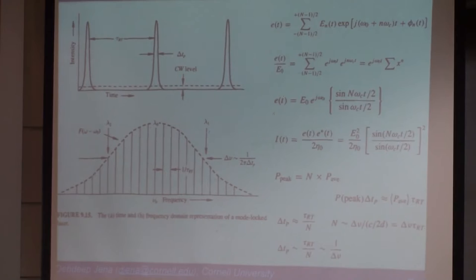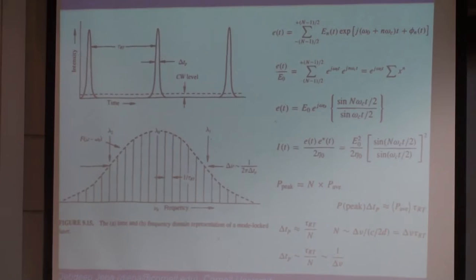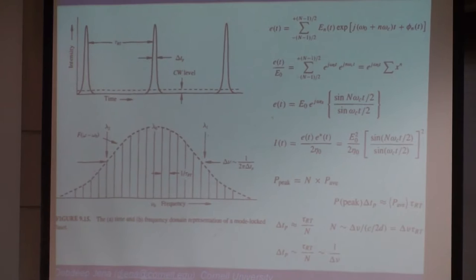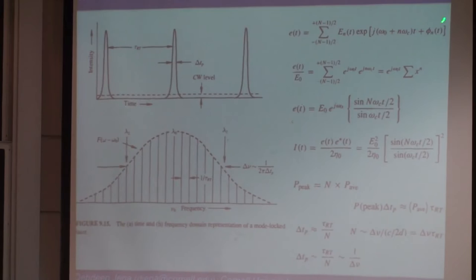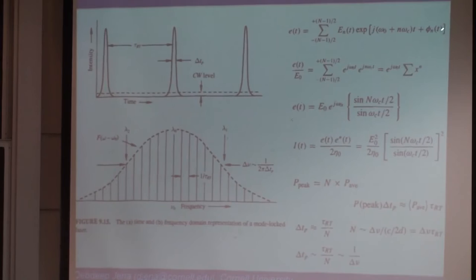Regarding where the random phase comes from: it's a noise term — we're allowing for the possibility of noise from various mechanisms. In a solid-state laser, there's the emission time, effects from phonons, vibrations, non-idealities. In a semiconductor, there may be defects in the material, and spontaneous emission is always occurring, creating background noise. Various sources contribute to that phase noise.